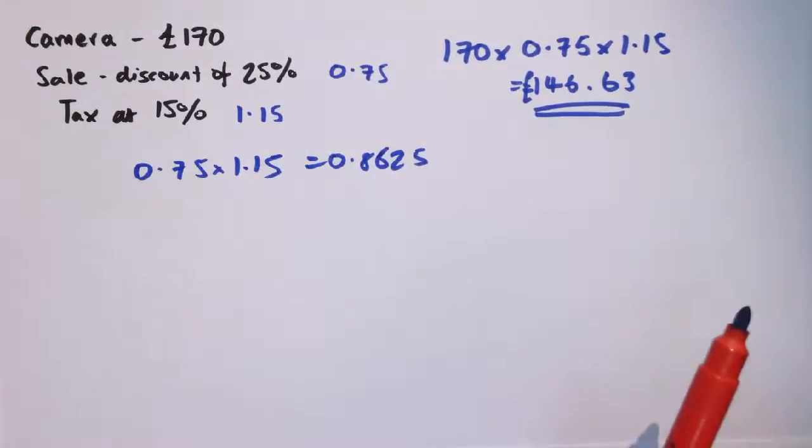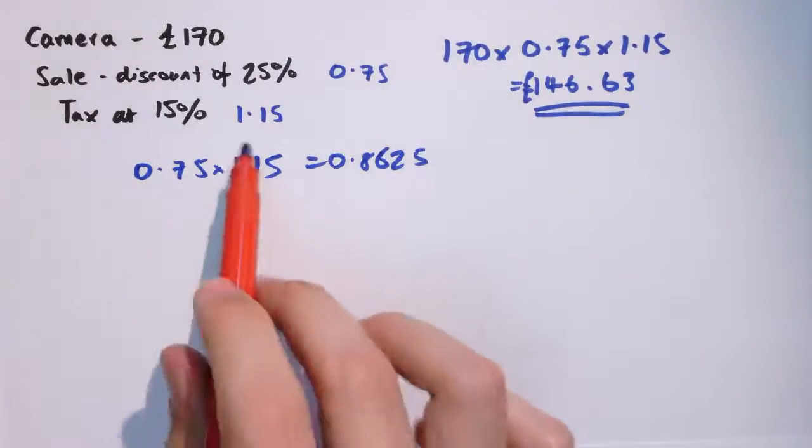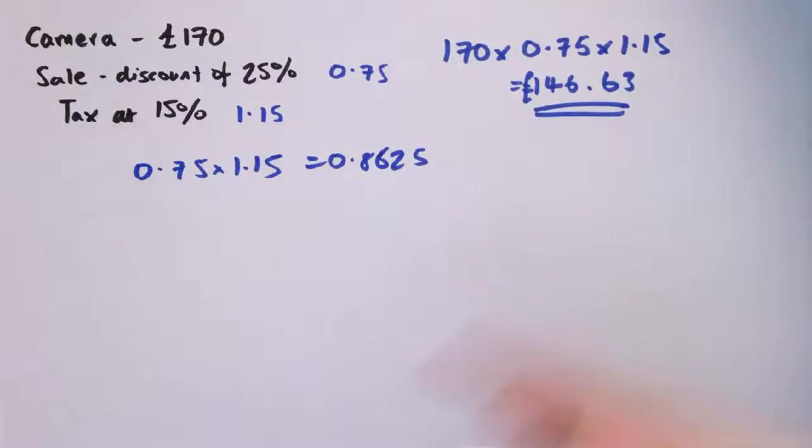One thing we notice from this as well is that it doesn't matter which way we apply them. We could have applied the tax first and then the discount, and the scale factor would have been 1.15 times 0.75, would have given us the same thing. So two scale factors applied one after the other, we must apply them together and apply that as the overall scale factor.